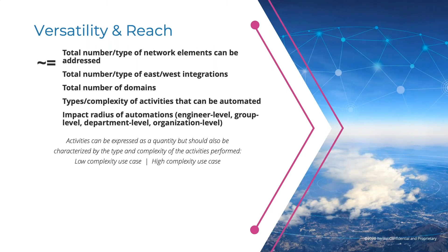The fourth and final metric is versatility and reach. These refer to two different but related concepts, addressing similar questions: how flexible is the platform for automating different kinds of activities, and how scalable is the solution to address high volumes of activities, devices, and domains? The math for calculating versatility and reach is not as straightforward as the other three, but we've had some success with an approach I'll describe shortly.